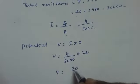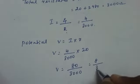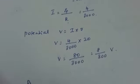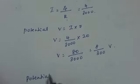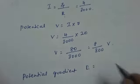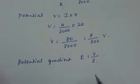It is 80 by 3000, we can write it as 8 by 300. Now what is potential gradient? Potential gradient E is equal to V by L.